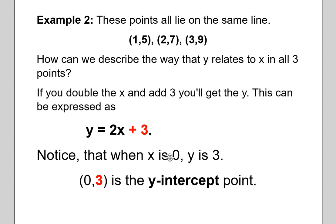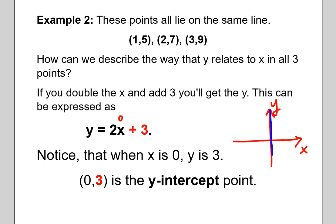Notice that when X is 0, Y is 3. And why is this important? Because if X is 0, that means you have not moved away from the Y axis — X is 0 everywhere on the Y axis. When X is 0, we figure out where the line is going to cross the Y axis, and it always gives us a Y intercept.